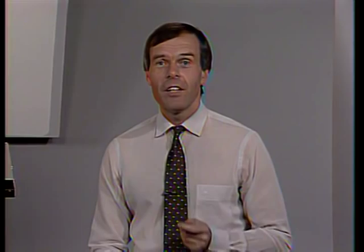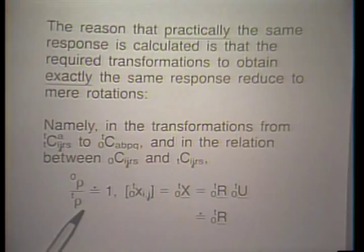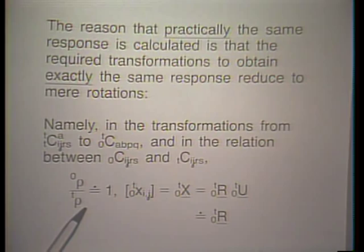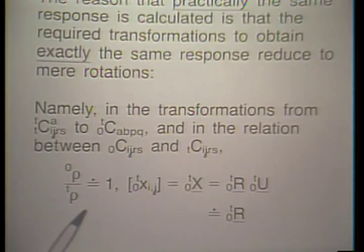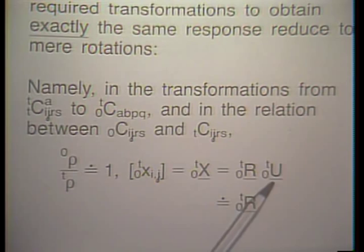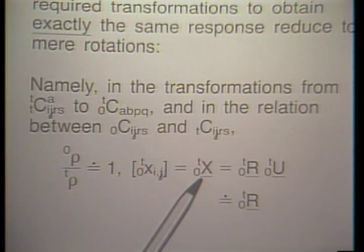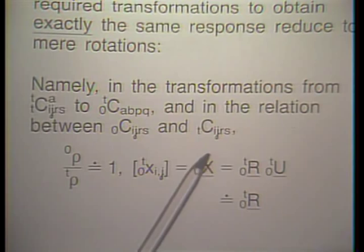The reason practically the same response is calculated using both formulations lies in the fact that the constitutive transformations that would be needed to obtain exactly the same results reduce here to mere rotations. For this type of large displacement, large rotation, but small strain problem, the mass density remains constant. The deformation gradient, which can always be written via polar decomposition as a product of a rotation matrix (orthogonal matrix) times a symmetric stretch matrix, is for large displacement, large rotation, small strain conditions almost equal to the rotation matrix only—meaning the stretch matrix is almost equal to the identity matrix.